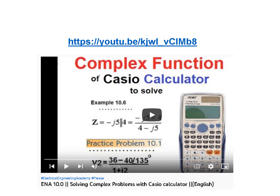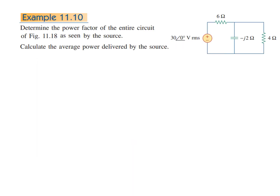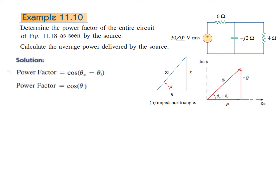For Example 11.10, determine the power factor of the entire circuit of the figure as seen by the source. We can calculate the power factor from the circuit, and also calculate the average power delivered by the source. The power factor is cosine of angle theta_v minus theta_i. From the circuit, we will use this formula to find the power factor.